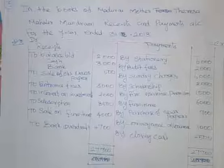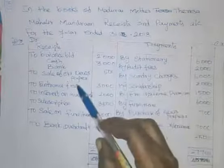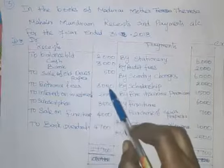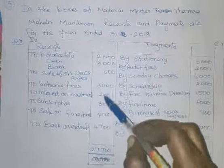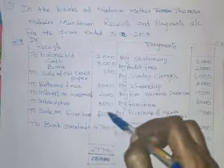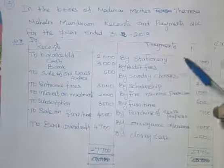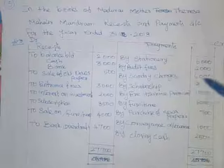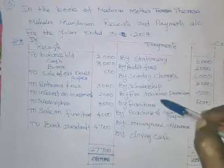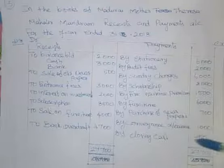In the books of Madurai Mother Tharsha Mahalir Mandram, Receipts and Payments Account for the year ended 31st December 2018. Receipt side: opening cash balance Rs. 2,000, bank balance Rs. 3,000. Sale of old newspaper Rs. 500. Entrance fees Rs. 3,000. Interest on investment Rs. 2,000 — it is an income, so interest on investment received. Subscription received Rs. 8,500. Sale of furniture Rs. 4,000 — assume profit on sale. Stationary purchase Rs. 6,000. Audit fees Rs. 2,000. Sundry charges Rs. 6,000. Scholarship Rs. 2,000. Fire insurance premium Rs. 1,500. Furniture purchased Rs. 6,000. Purchase of newspaper Rs. 700. Conveyance allowance Rs. 1,000. Closing cash balance Rs. 2,500.